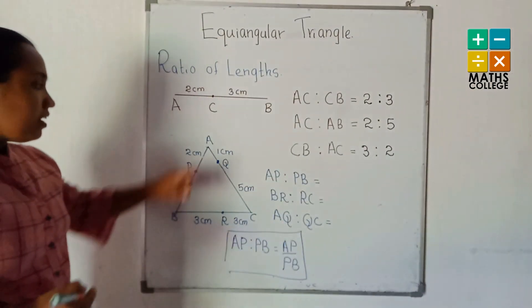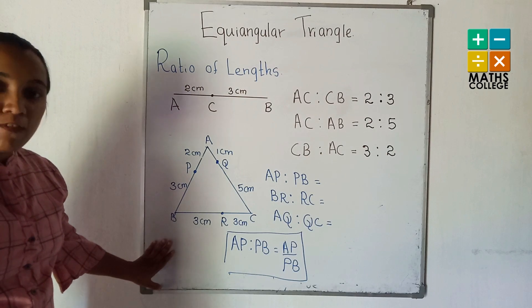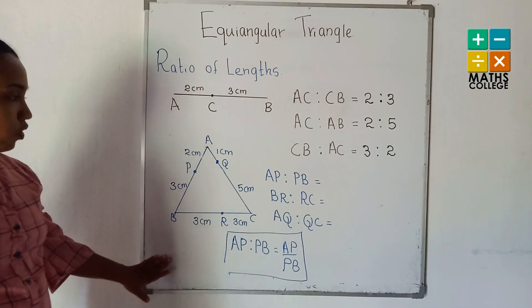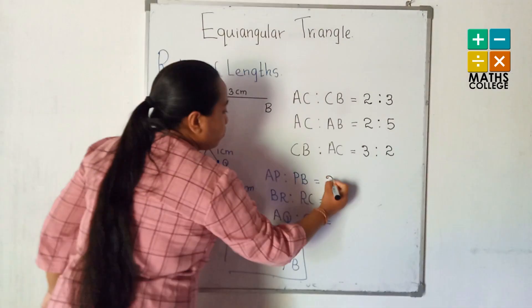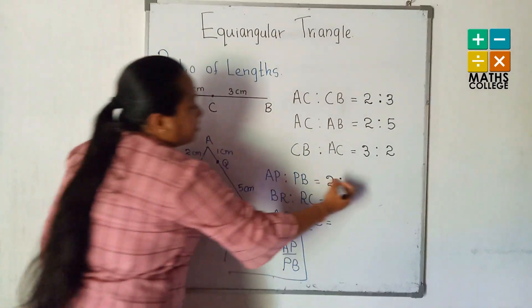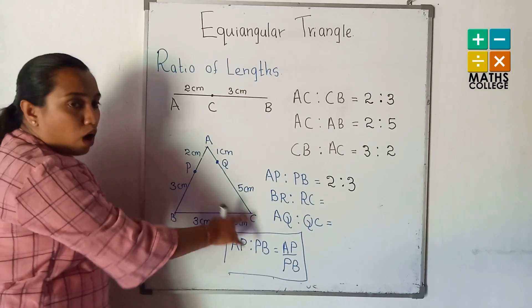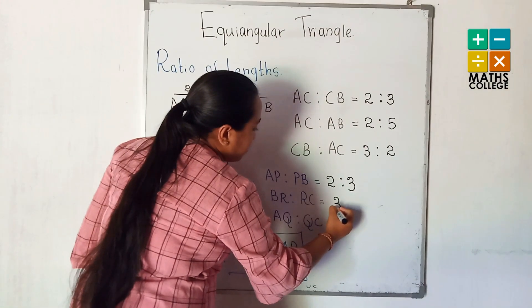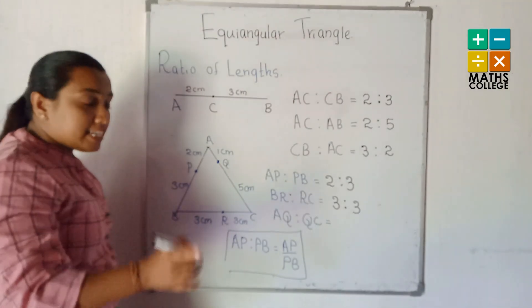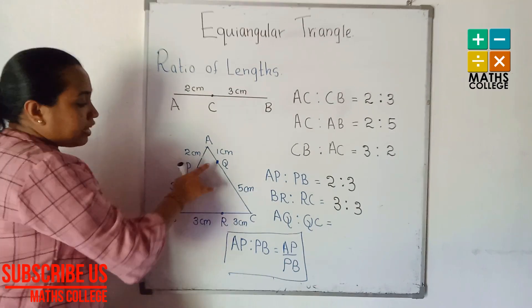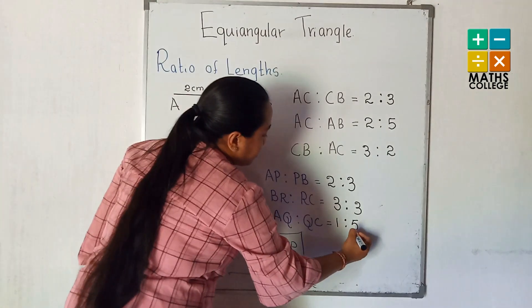Let's go to another example. This is the ABC triangle. P, Q, R points are on the three sides of the triangle. AP to PB: the length of AP is 2 and PB is 3, so AP to PB is 2 to 3. BR to RC: BR is 3 cm and RC is also 3 cm, so the ratio is 3 to 3. AQ to QC: AQ is 1 cm and QC is 5 cm, so the ratio is 1 to 5.